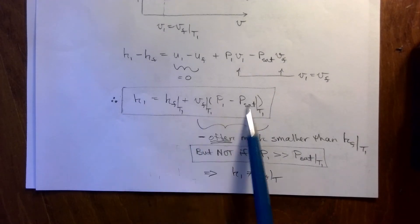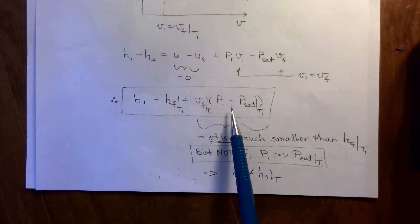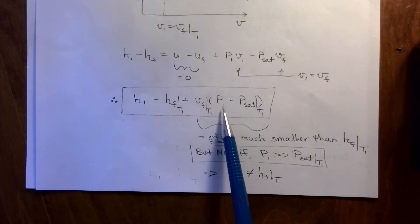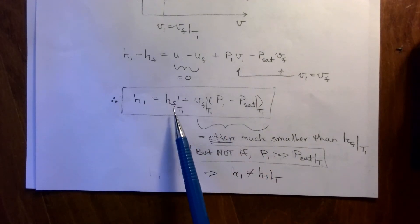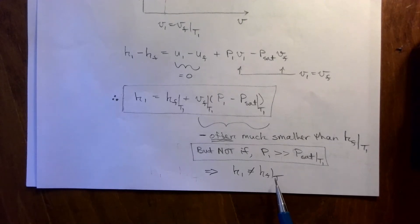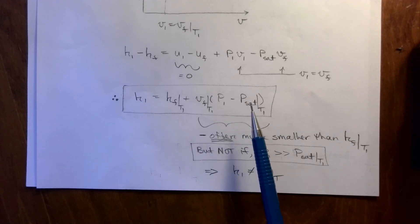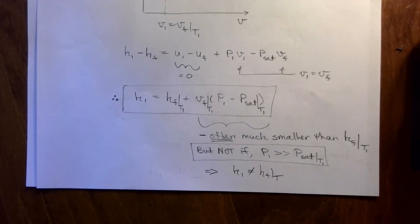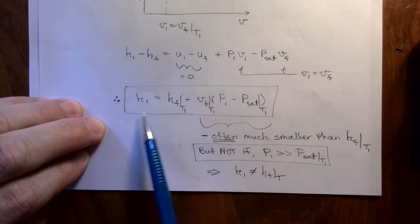Taking HF to the other side gives the equation you're already familiar with: H1 equals HF plus VF times (P1 minus PSAT). This is where the pressure dependence comes in for H. Often this term is much smaller than HF because specific volume is a small number for liquids — the pressure really has to be hugely higher than PSAT before this term becomes a significant contributor. But in general it is not true to say H1 equals HF at T; you must include the pressure correction term, then decide whether to neglect it with proper justification.